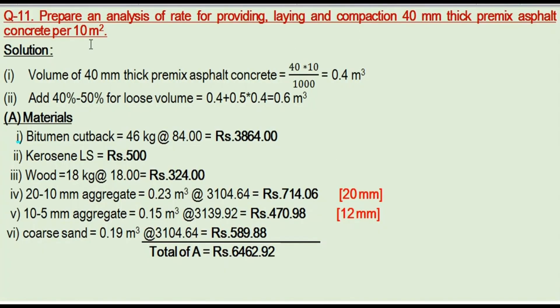For the asphalt concrete, the units are per square meter. We are working with a surface area of 10 meters square and a thickness of 40mm. This is a bituminous road surface — asphalt concrete, 40mm thick. From this, we calculate the volume.